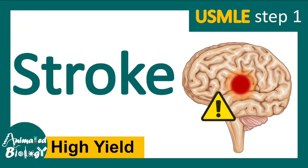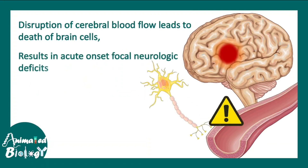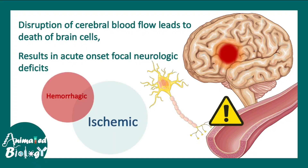In this video of the Yosemite High Yield series, we will talk about stroke, or cerebrovascular accidents. Disruption of cerebral blood flow leads to death of brain cells, resulting in acute onset focal neurologic deficits. This is known as stroke, and it can be ischemic or hemorrhagic.